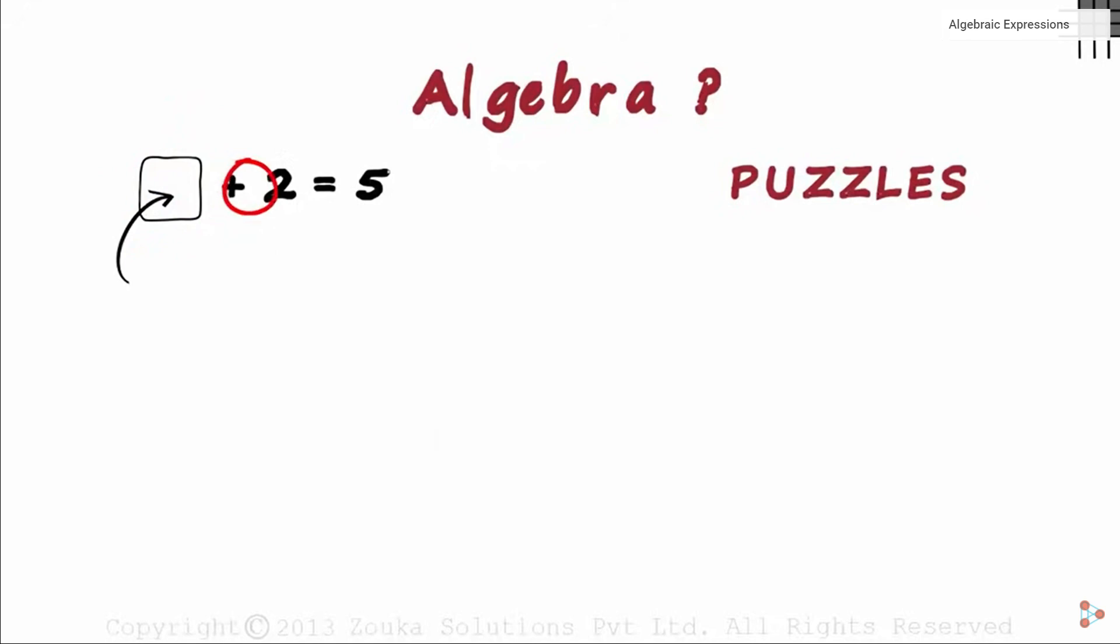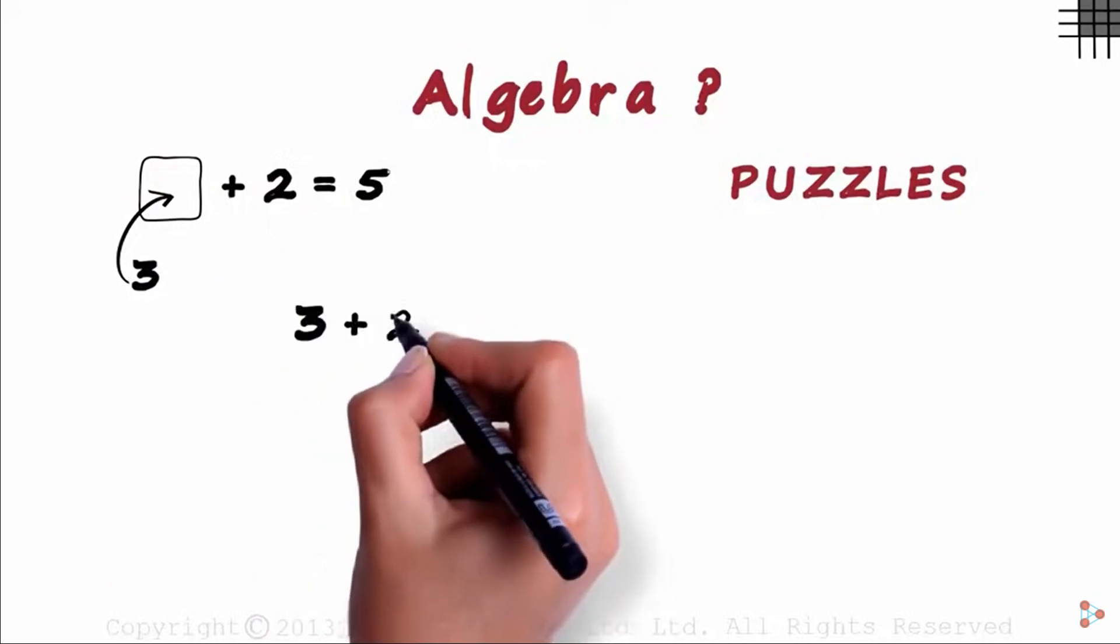Which number when added to 2 gives us 5? Simple. It's 3. We can say that 3 plus 2 equals 5.